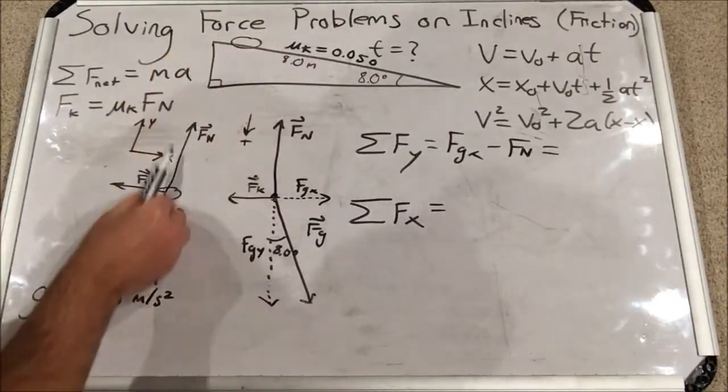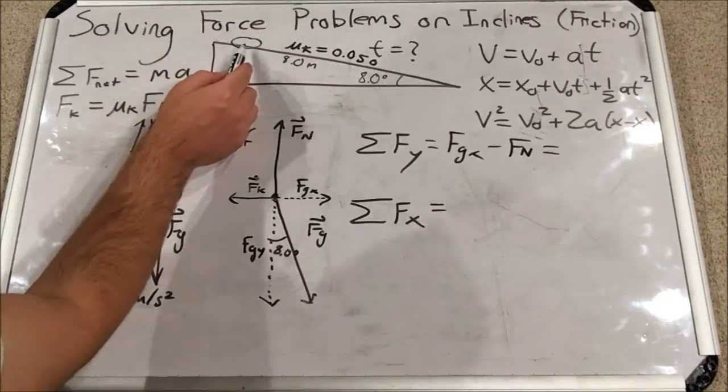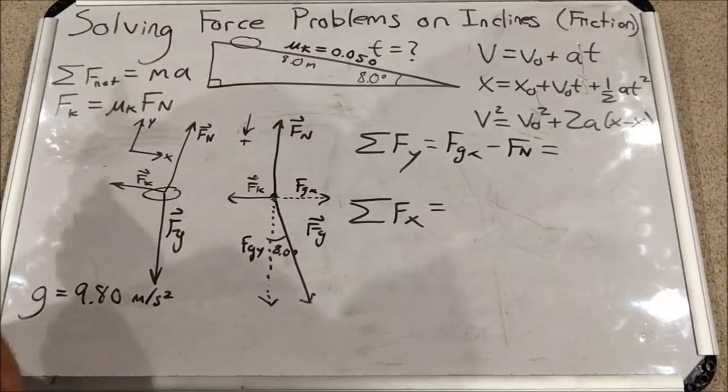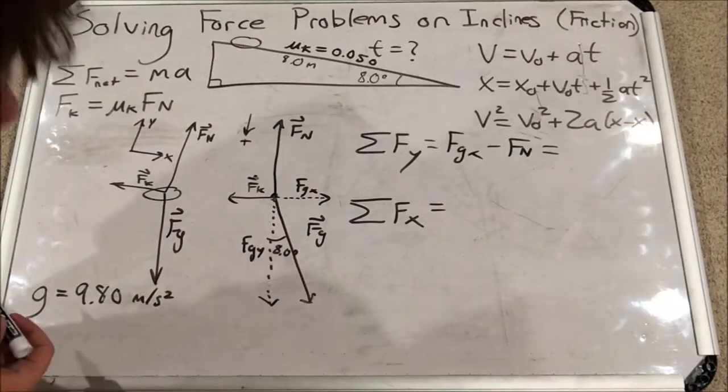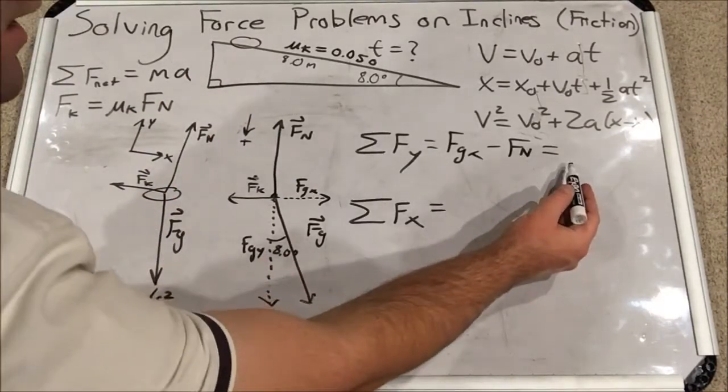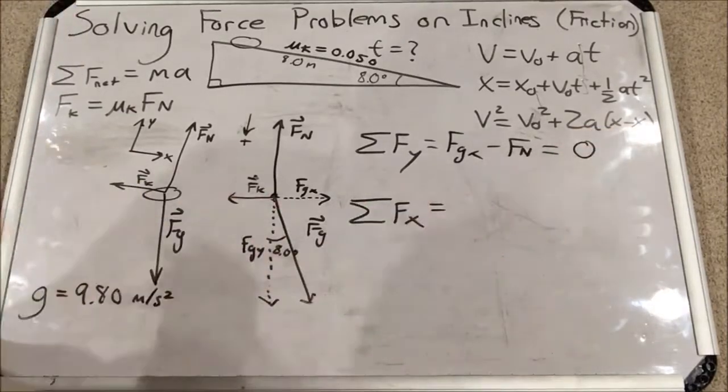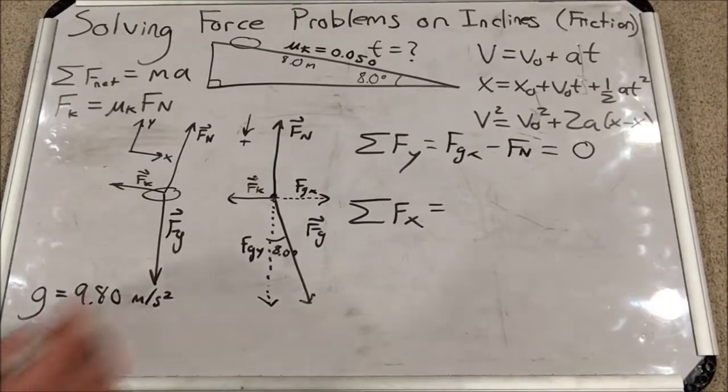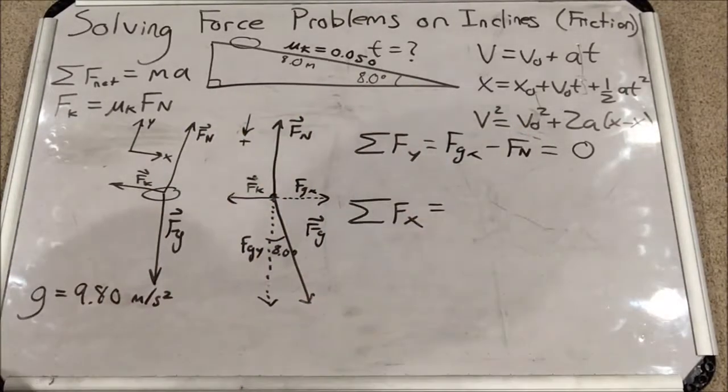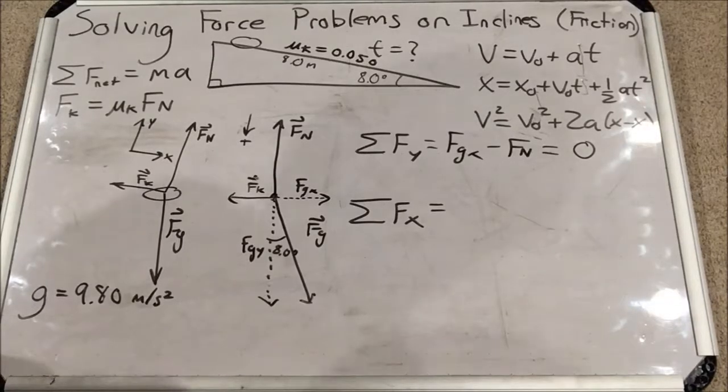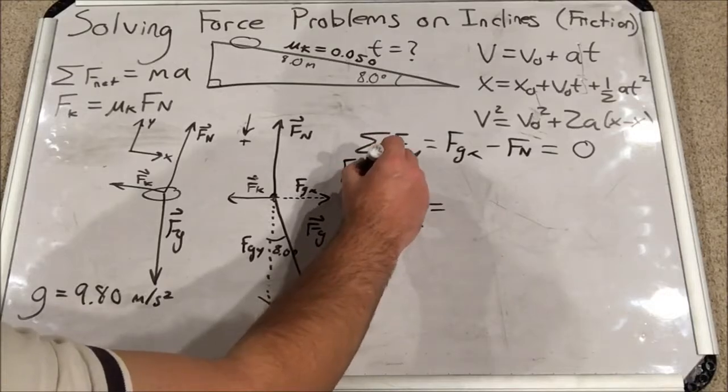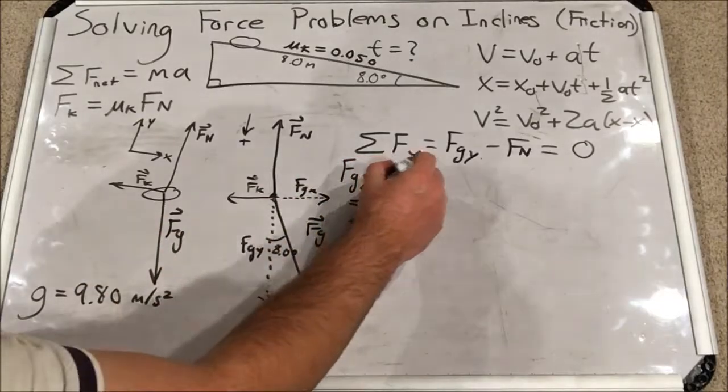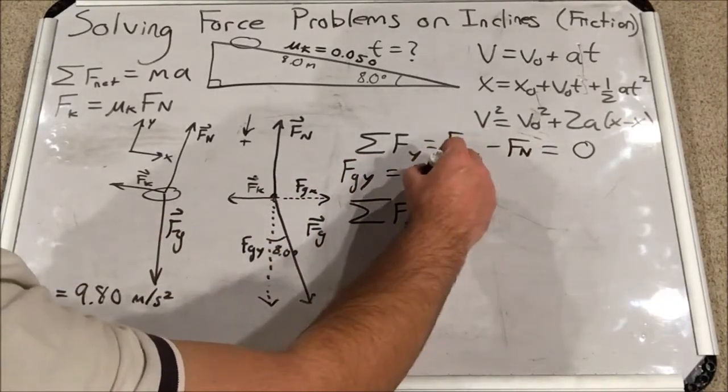Well, that would only be true if the soap is levitating off the ramp, which it's not. Or if it's falling through the ramp, which it's not. So that means ma is m times zero or zero. Let's continue our analysis. I'm going to need an expression for the normal force in this problem. So I'm going to separate the normal force right now. Fgy will equal Fn when I add it to the other side.